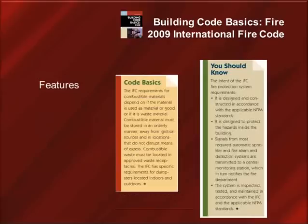Throughout the 242 pages of technical content in Building Code Basics Fire, we also include two helpful features to ensure that the reader understands each area of the subject matter. You will see a dialogue box titled Code Basics, provided in each section to summarize what the basic requirements are being presented in the book. In each chapter, you will also see a second dialogue box known as You Should Know, which summarizes key elements of the content within the chapter so that the reader ensures they understand the provisions regarding the applicable subject.